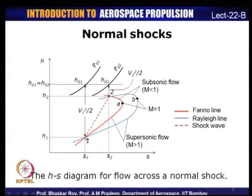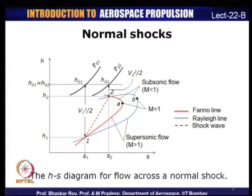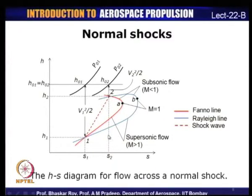We have seen that stagnation enthalpy does not change across a shock wave, so at points 1 and 2 the stagnation enthalpy should be the same: H₀₁ = H₀₂. This joins the two intersection points of the Fanno and Rayleigh lines. The static enthalpies can obviously be different. Static enthalpy H₁ + V₁²/2 = H₀₁, and similarly H₀₂ = H₂ + V₂²/2. Since velocities differ across the shock (V₂ < V₁), H₂ > H₁. Entropy across the shock increases since the shock is an irreversible process, so S₂ > S₁.